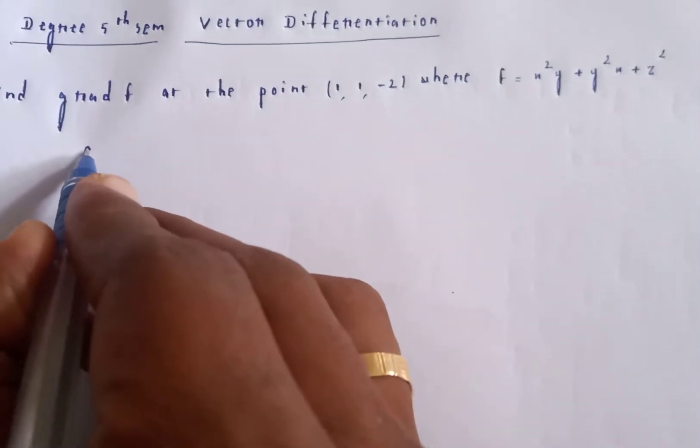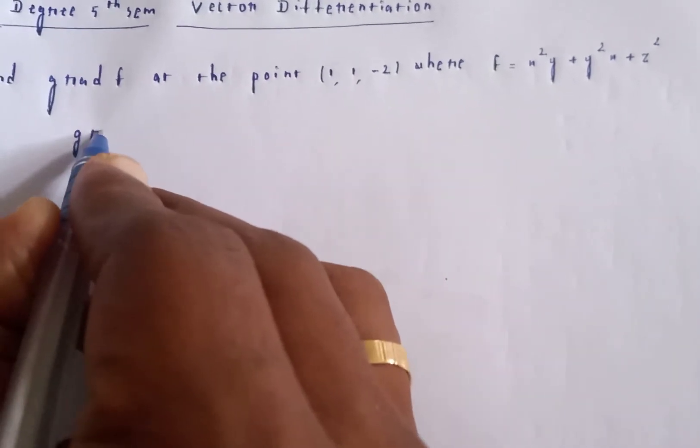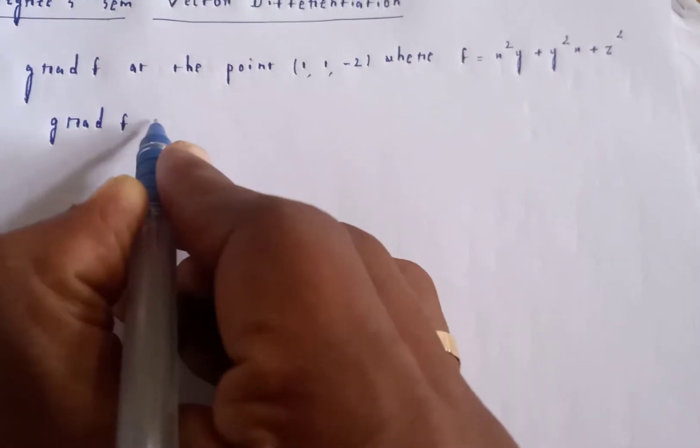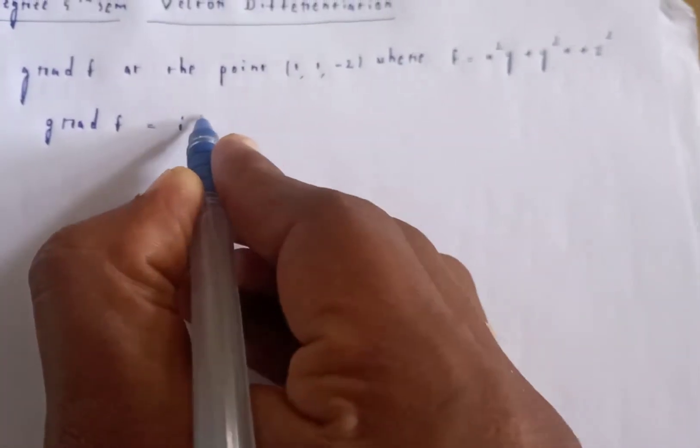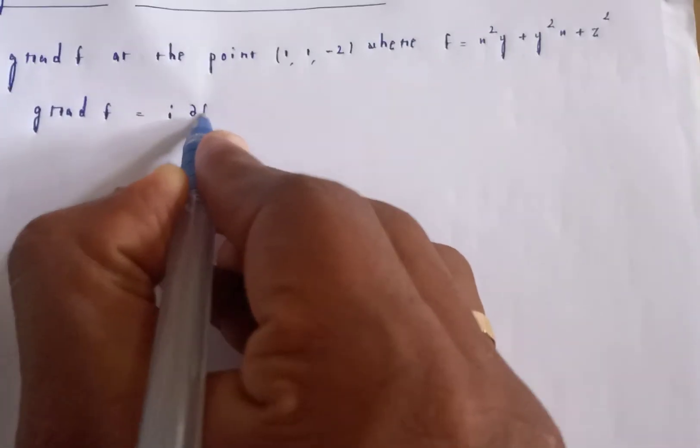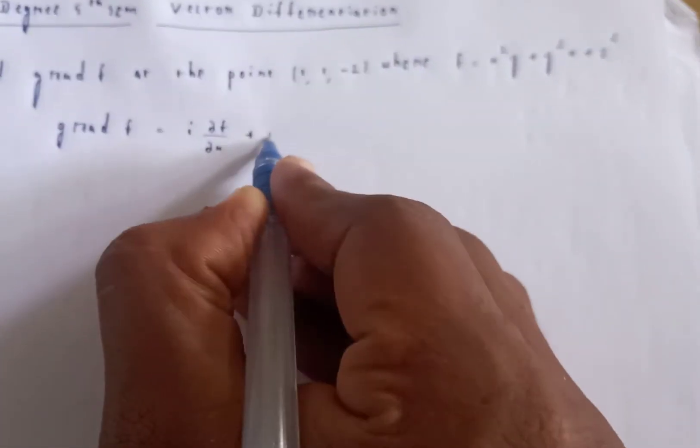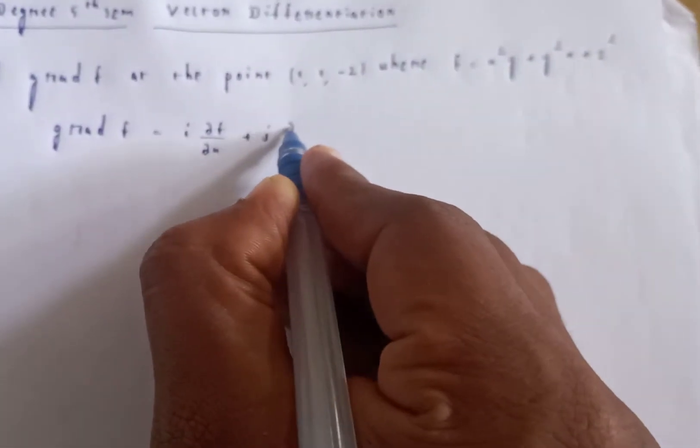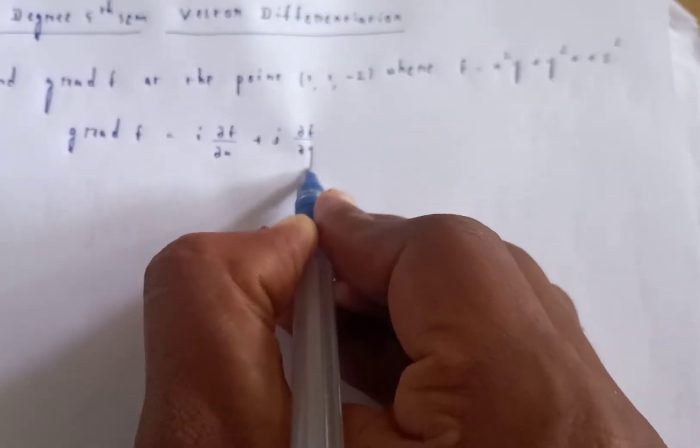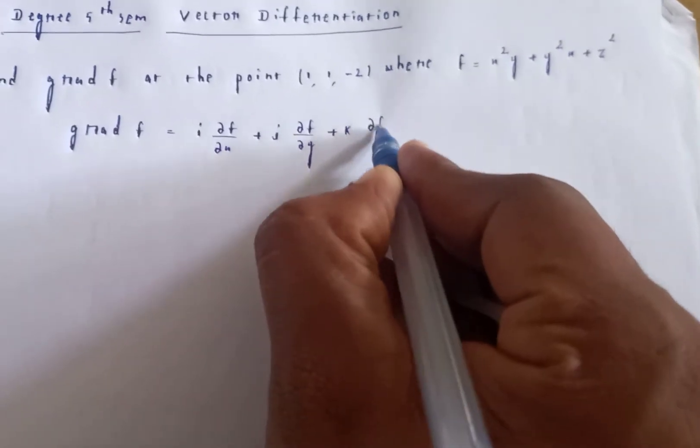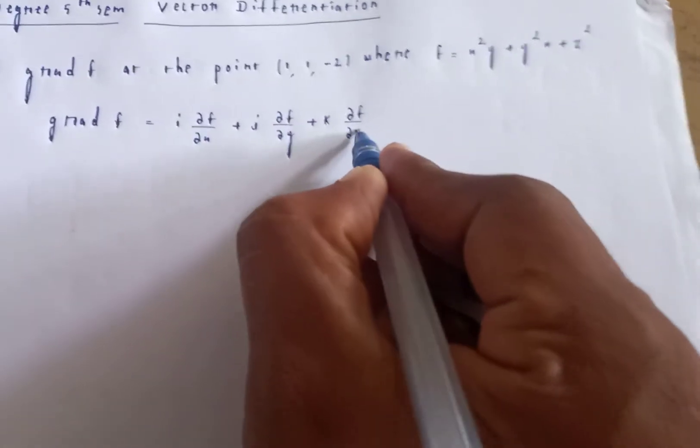Gradient F equals i times ∂F/∂x plus j times ∂F/∂y plus k times ∂F/∂z.